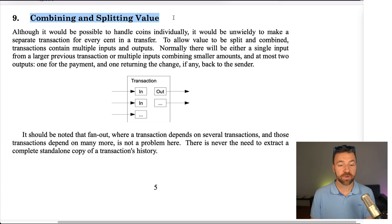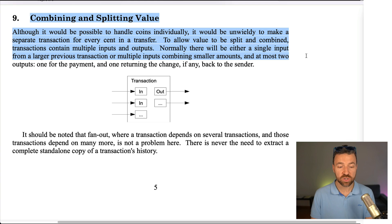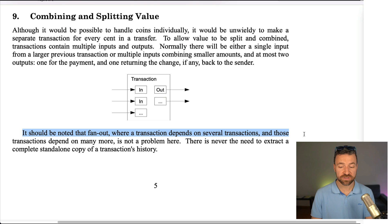Number nine, combining and splitting value. Although it would be possible to handle coins individually, it would be unwieldy to make a separate transaction for every cent. To allow value to be split and combined, transactions contain multiple inputs and outputs. Normally there will be either a single input from a larger previous transaction or multiple inputs combining smaller amounts, and at most two outputs: one for the payment and one returning the change back to the sender. There is never the need to extract a complete standalone copy of a transaction's history.